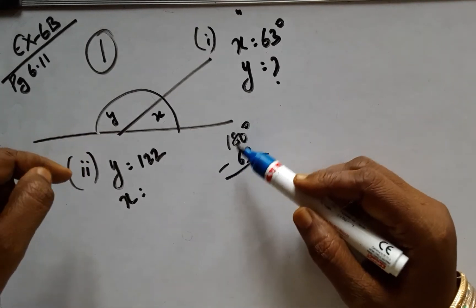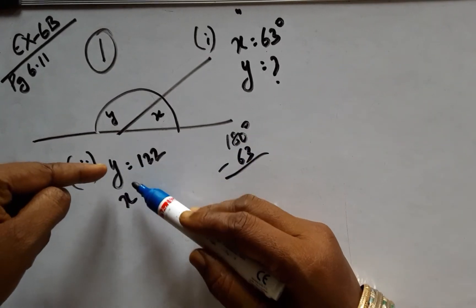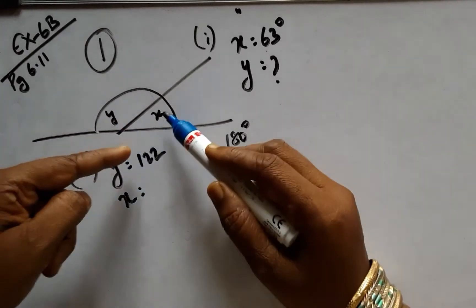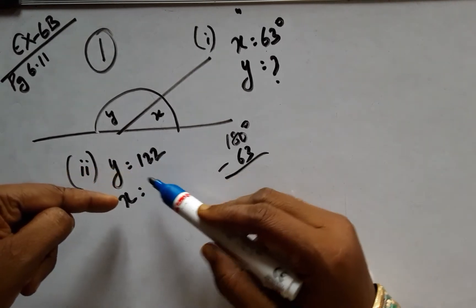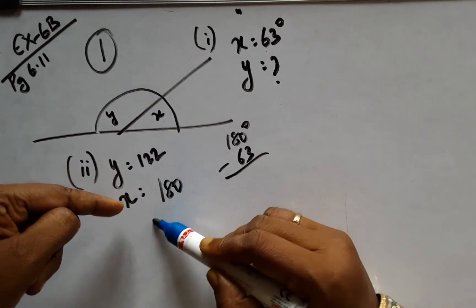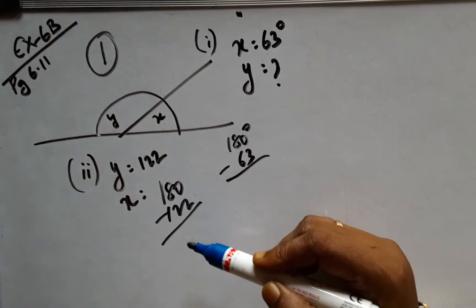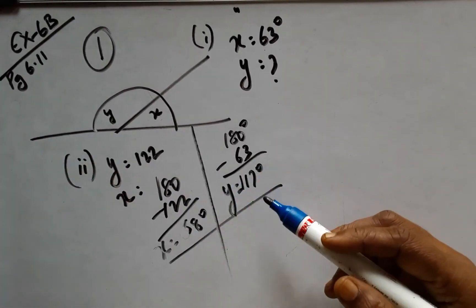Now simple math need not be attended. And here y is asked and x is given, and y is 122. Its supplement will always be the linear pair less 122. Kindly do the math yourself.